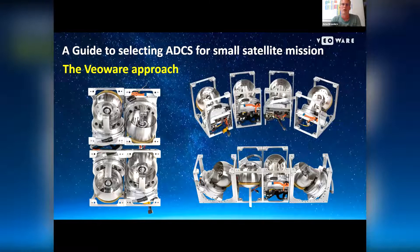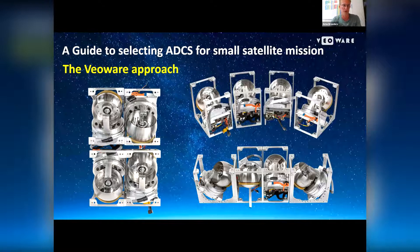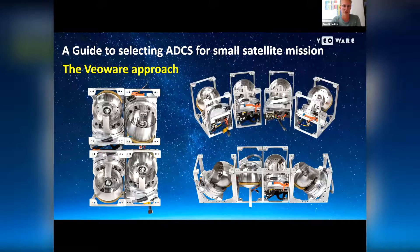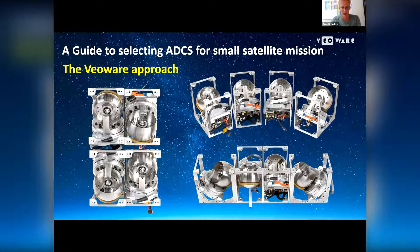Our modular approach also allows you to arrange these modules in your satellite as you want. On the left, we have an array approach; on the bottom, a linear approach; and the top right demonstrates that every CMG can be placed in a different location in your satellite. Every module holds its own communication and control electronics, so it is perfectly possible to scatter them through your system.